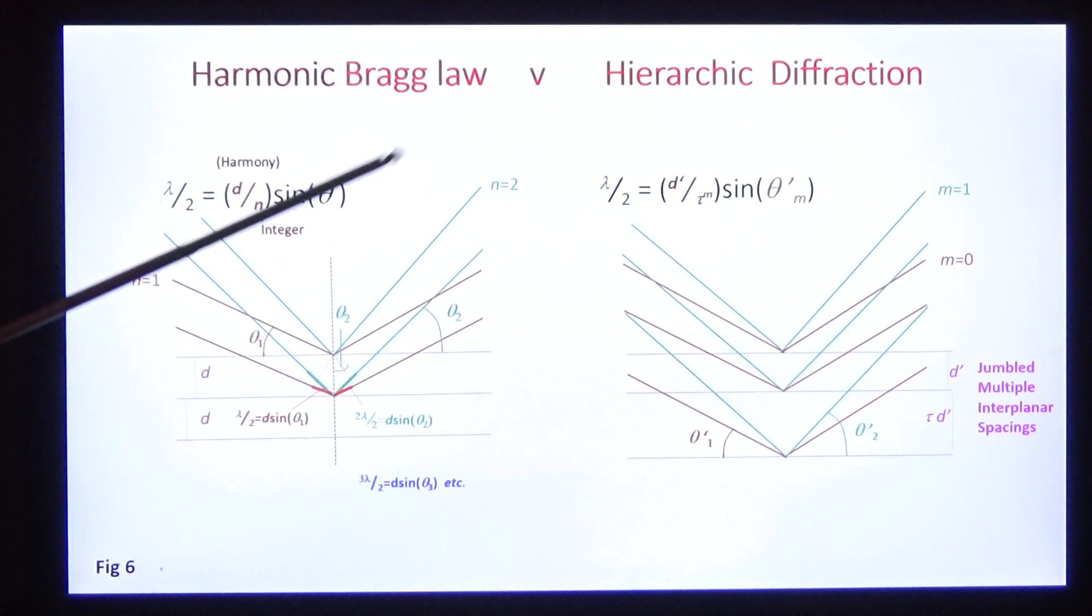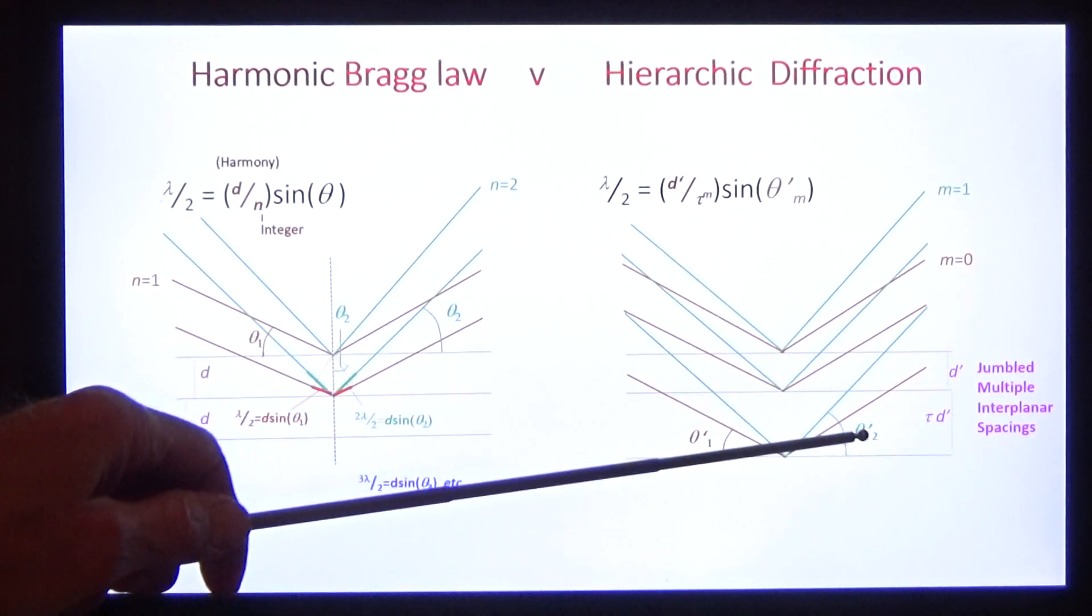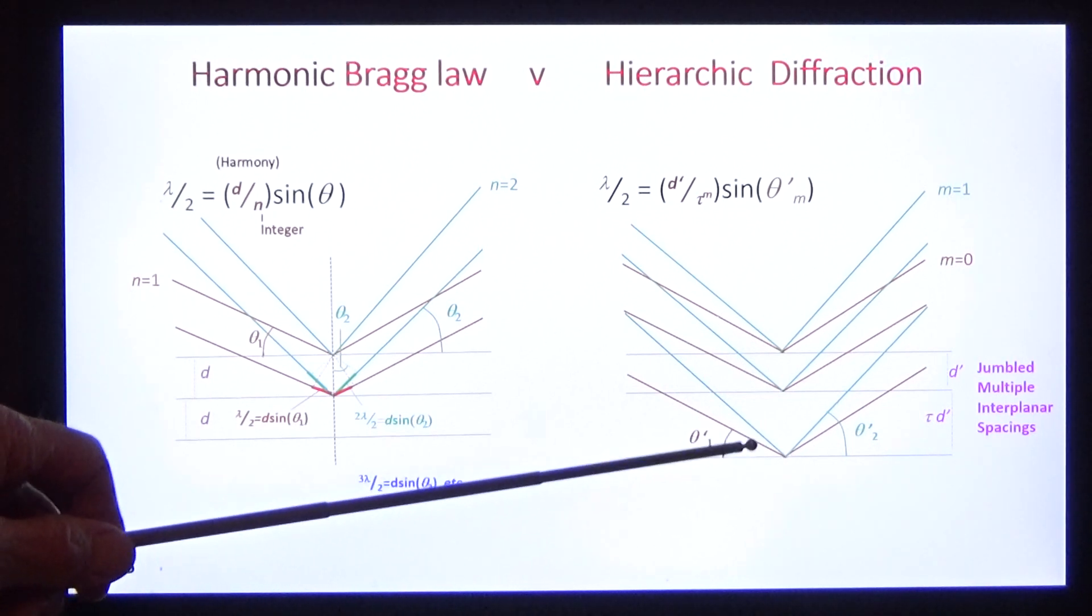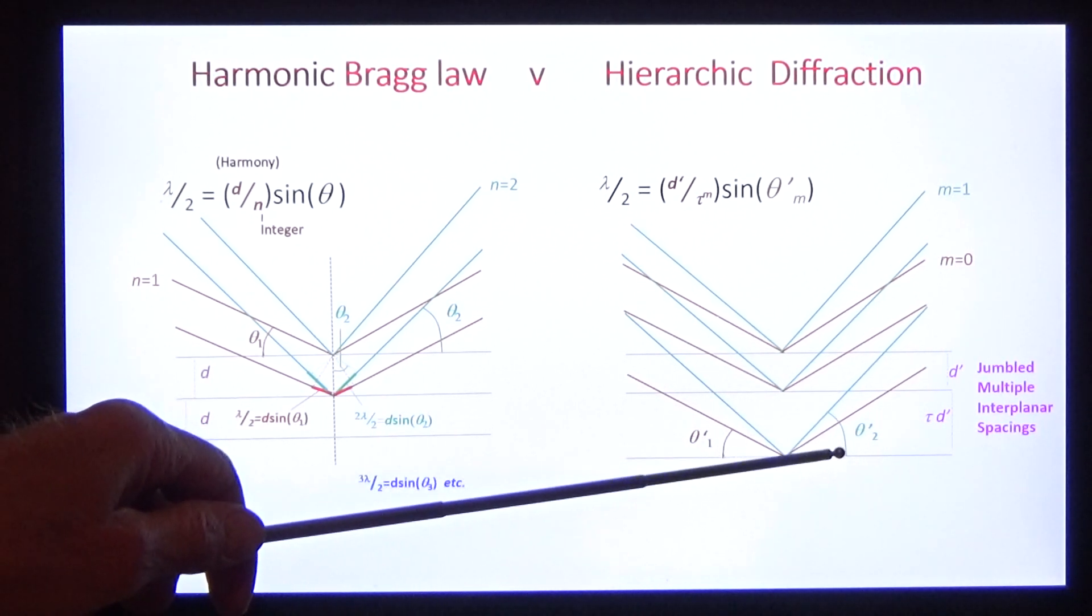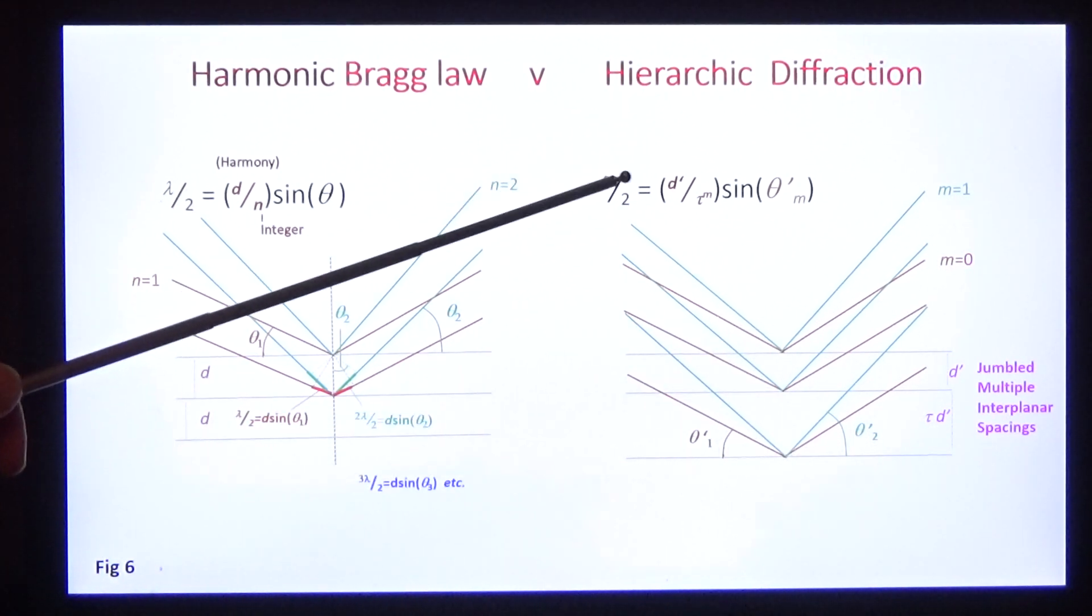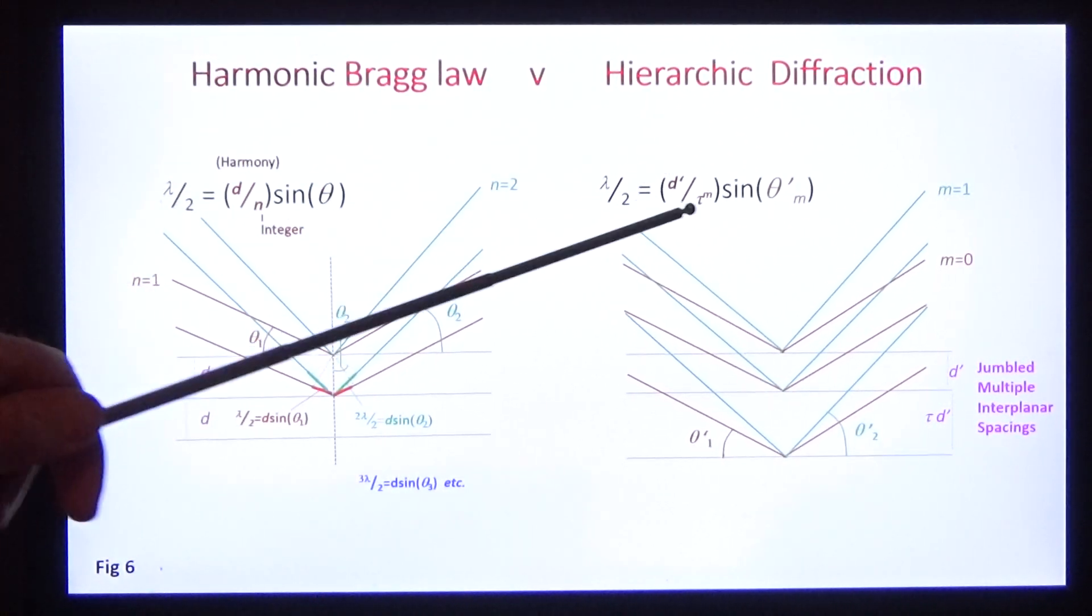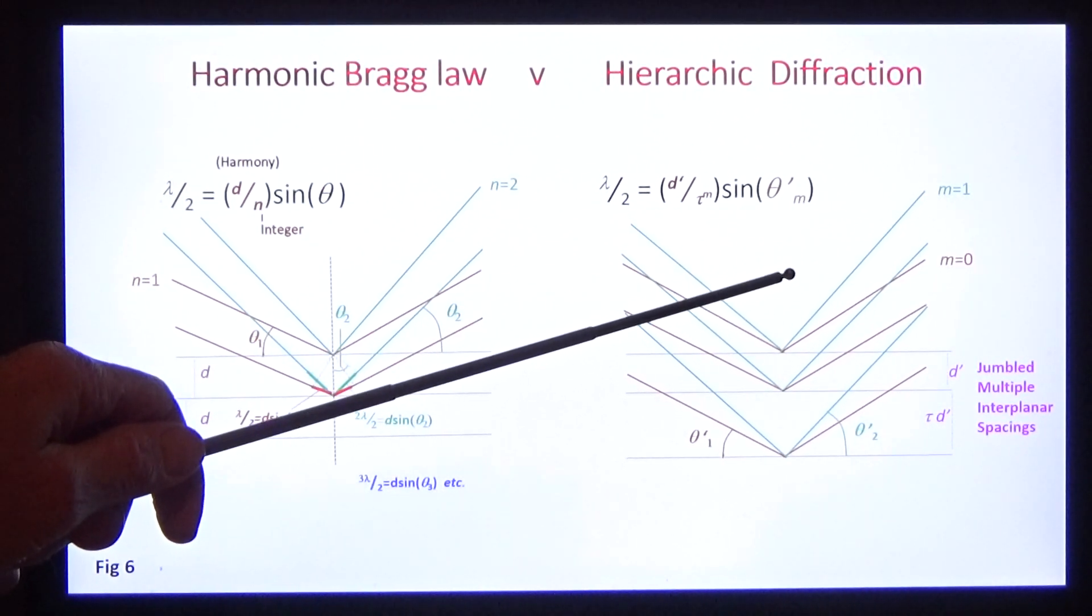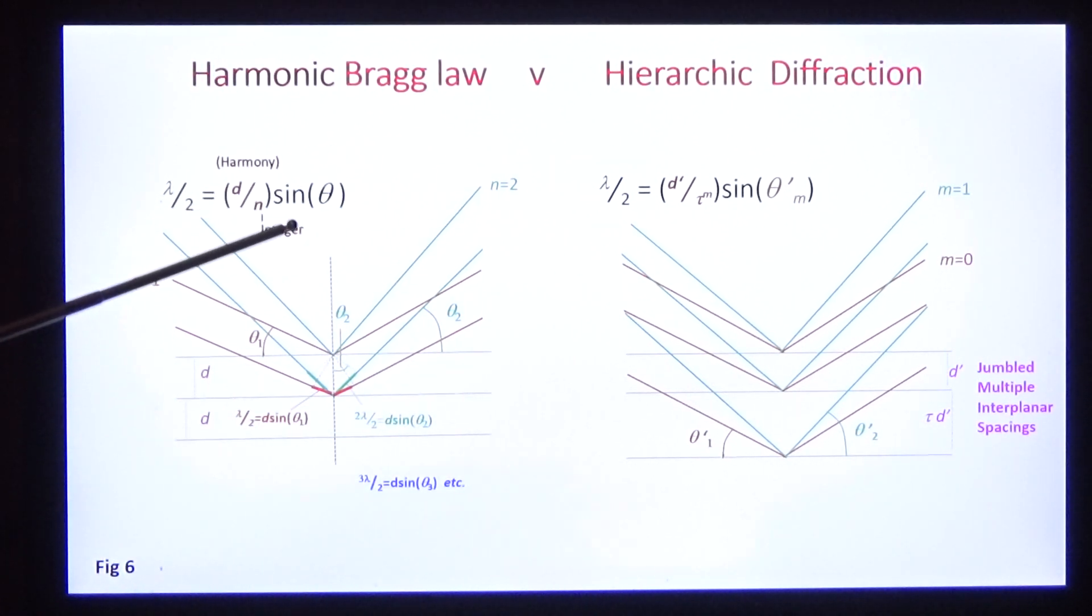Quasicrystals are completely different. The interplanar spacings are multiple. The relationship between theta, the scattering angle, and lambda is very complex. If we want to know what it is, we have to calculate structure factors, because structure factors are independent of theta, unlike Bragg's law.